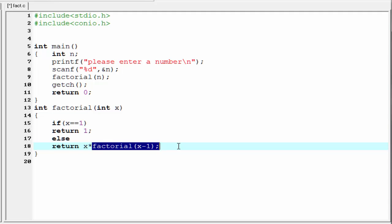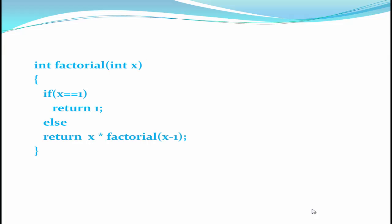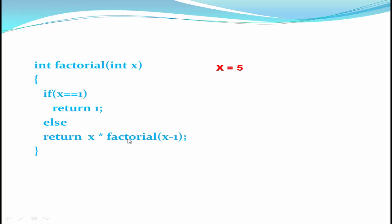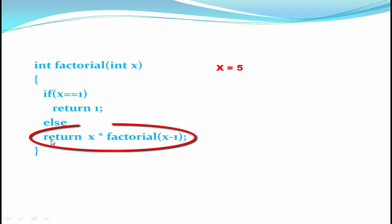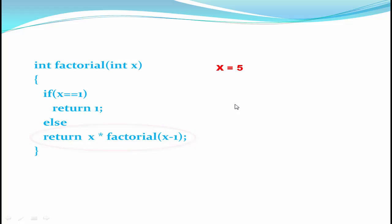Let's see how the recursive function works. Suppose the value of x is 5, then it checks if x == 1 — no, the condition is false. Then it executes the else block and returns x multiplied with factorial(x - 1). For 5, it will return 5 multiplied with factorial(4). It calls the factorial function again and this time the value of x is 4.